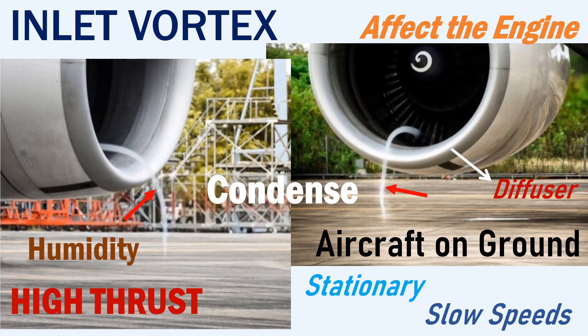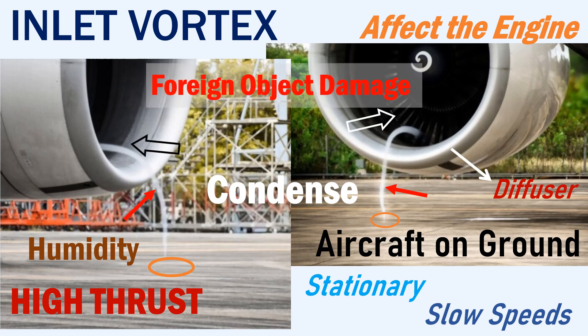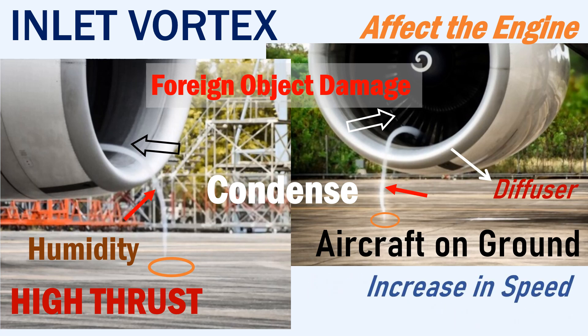This vortex trail may affect engine operation, whereas other contrails do not affect the engine or the aircraft. This is because any dirt or small objects at this section will be sucked into the engine, resulting in foreign object damage and affecting the engine's operation. These trails only occur under specific conditions and will disappear as the aircraft's speed increases or if there are any crosswinds.